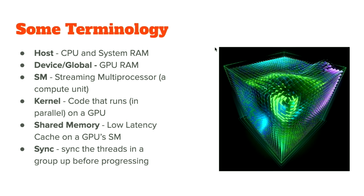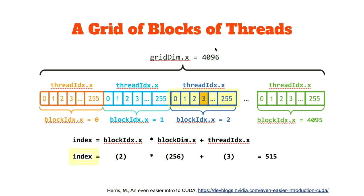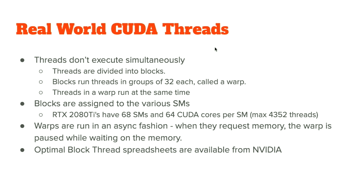Let's talk about what happens when reality sets in CUDA land. Some terminology: host means the system and CPU; device refers to the GPU; SM is the streaming multiprocessor; kernel is the code that runs on the GPU; and shared memory is the memory available in each GPU SM. Threads in a GPU are spread into blocks, and each of these blocks are arranged together in a grid — this is how threads are scheduled, because obviously we can't have a million threads running simultaneously.